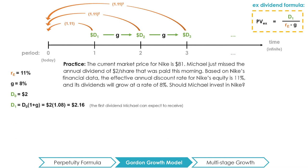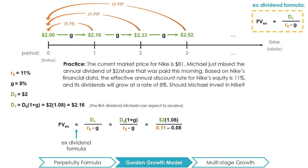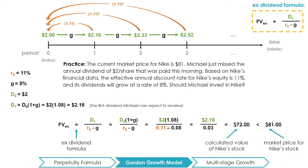In other words, if Michael decides to buy Nike stock today, then he can expect that the first dividend he will receive will be $2.16 a year from now. By plugging the values for D1, RE, and G into the ex-dividend formula, we can calculate that the price of Nike stock is $72. Michael realizes that the value of a Nike share is actually less than the market price of $81, and thus you recommend to Michael that he shouldn't invest in Nike stock. Just don't do it.